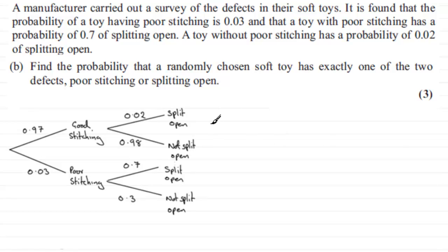Okay so I'm going to put probability of only one defect. Now if we're looking for only one defect, always start at the beginning of any tree diagram.